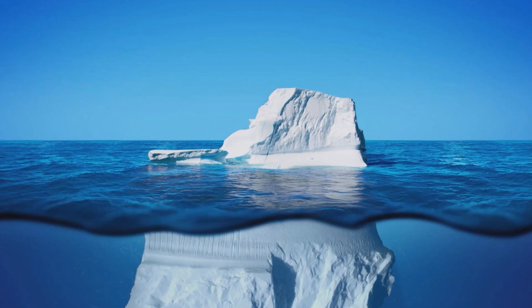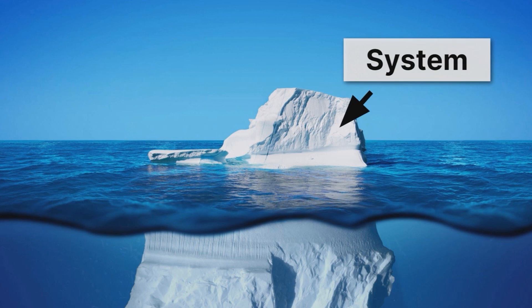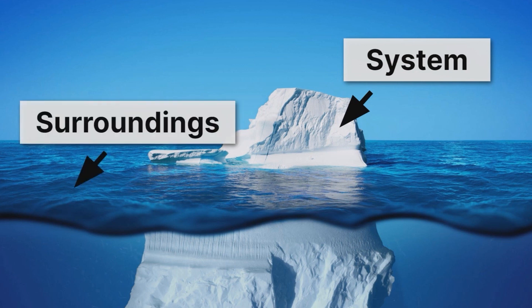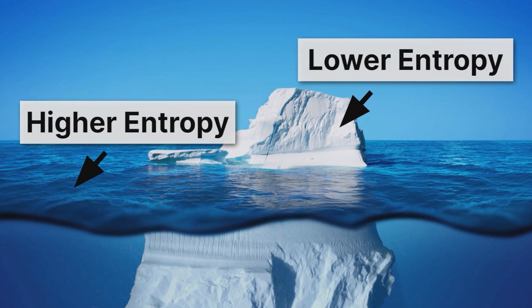Let's take a look at another example. Here we have an iceberg. In order to understand more clearly this tradeoff between entropy increasing in some places and decreasing in others, we need to clearly define some terms. One is the system — the system is just the thing we're studying. So let's say we want to study the iceberg. It's surrounded by a bunch of stuff and we'll call that the surroundings. So we have a system, the iceberg, and the surroundings. If I put all of those together, I have the universe.